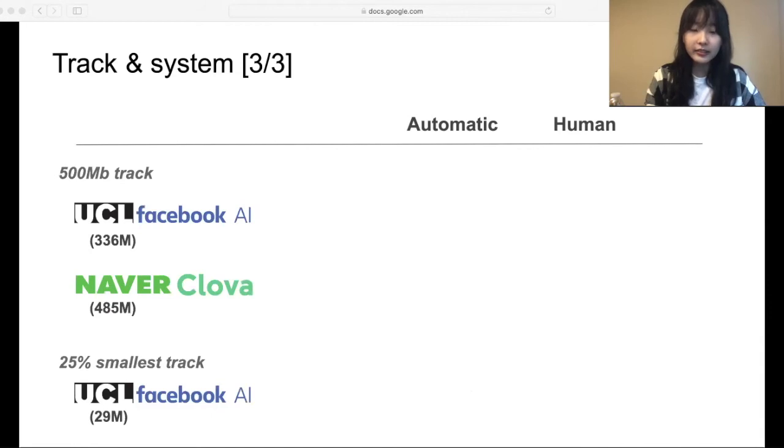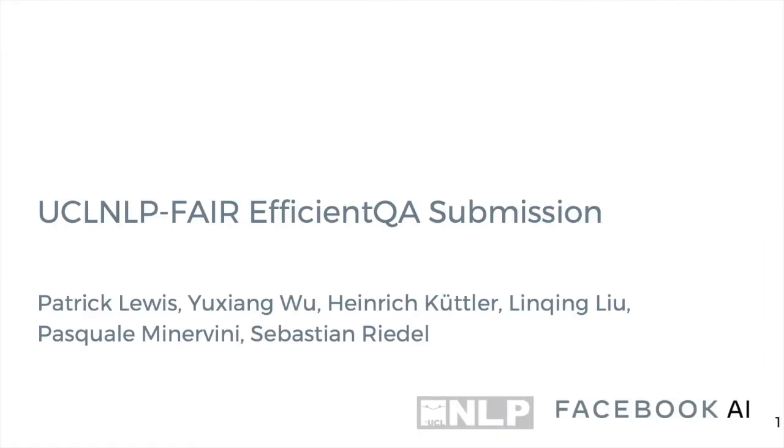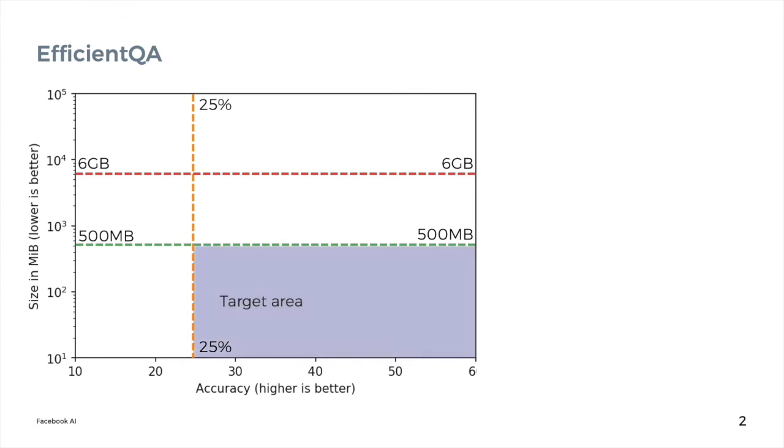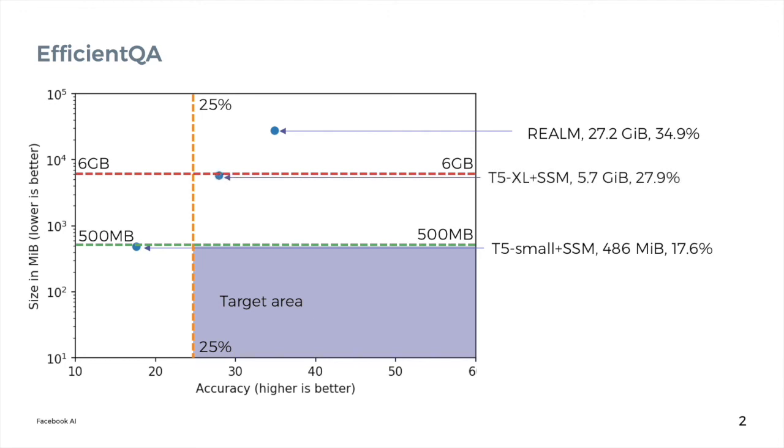These are the last two tracks. In 500MB track, the system should be under 500MB and achieve the highest accuracy. The top two systems are the one from UCL plus Facebook AI and the other from Naver Clova. In 25% smallest track, the system should achieve 25% or higher accuracy and then have the smallest size. A system from UCL plus Facebook AI is only 29MB, being the first place with significant margin from the second place.